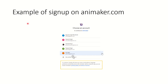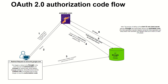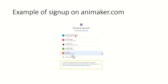We will take an example of signing up on animaker.com to understand the behind-the-scenes working of the OAuth 2.0 authorization code workflow. Imagine you are a user who wants to use animaker.com, a website that provides animation videos for trainings and presentations. When you place a request from your browser to animaker.com, it asks you to sign up and gives you options: do you want to use your Apple ID, Facebook, or Gmail ID?